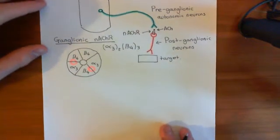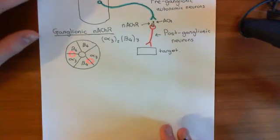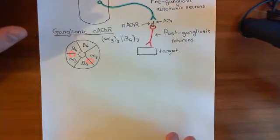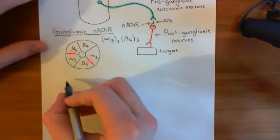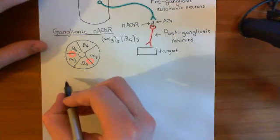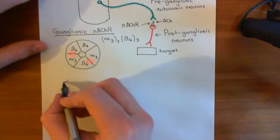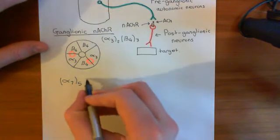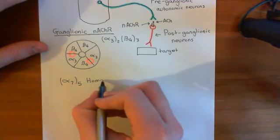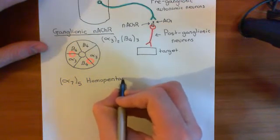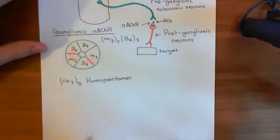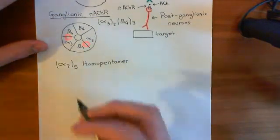Now what we'll move on to is the forms that are within the brain. In the brain, some neurons have nicotinic acetylcholine receptors, and there are two main forms. The first I wish to discuss is the alpha-7, 5 homopentamer — a nicotinic acetylcholine receptor formed by putting an alpha-7 subunit in all five sockets.